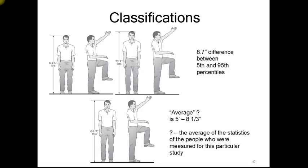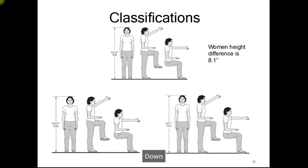There is an 8.7-inch difference between the average shorter man and the average taller man — between the 5th and 95th percentiles — with the average male at 5 feet 8 and a third inches. For women, the height difference between the shortest and tallest is 8.1 inches — slightly less variation than for men.